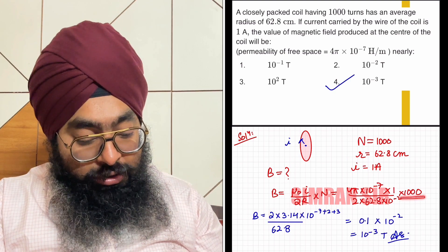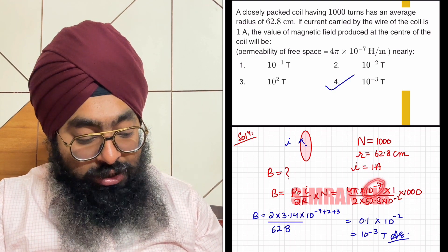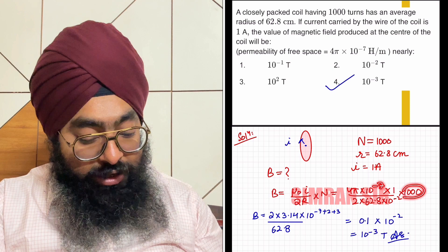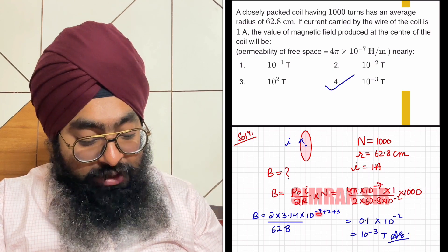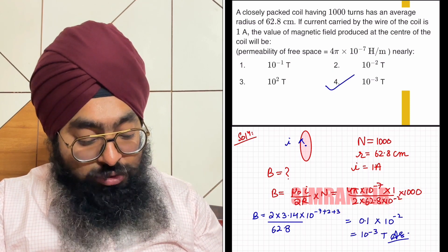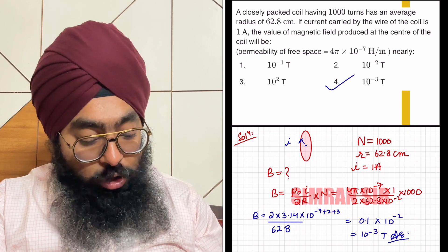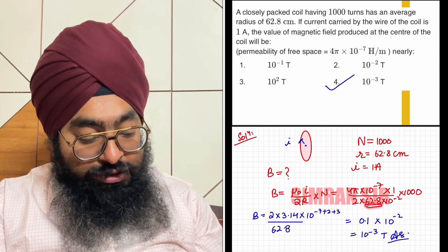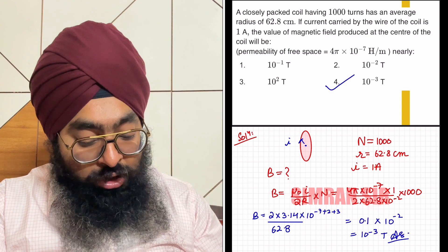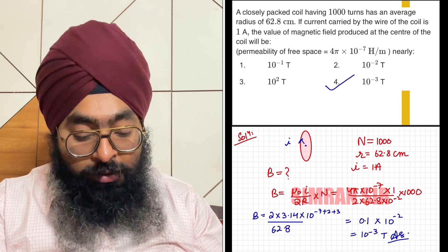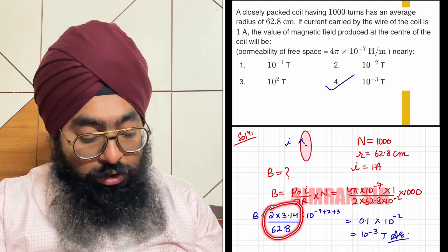Here we have 1000 and 10⁻⁷, so we can write 10⁻⁷ and 10³ as 10⁻⁷⁺³. Below we had 10⁻², which goes up to become +2. In the denominator we have 62.8, since 2 and 4 already cancelled.